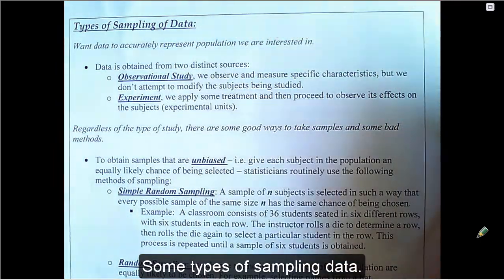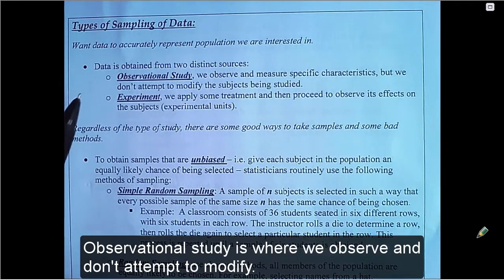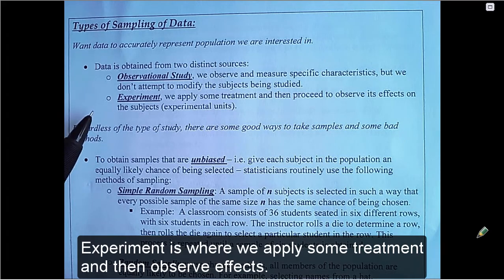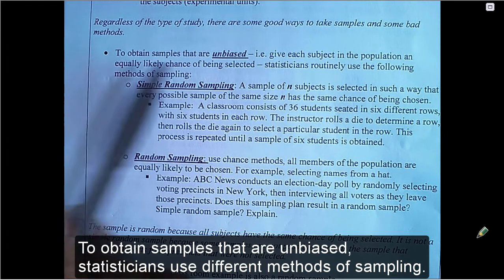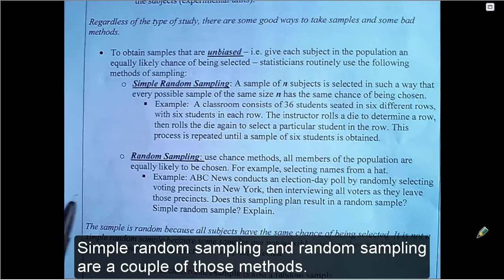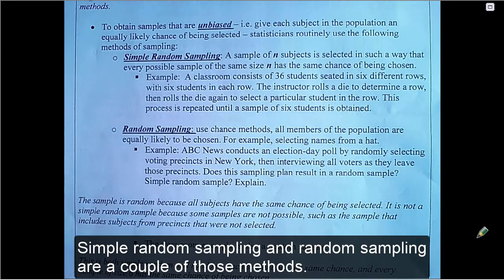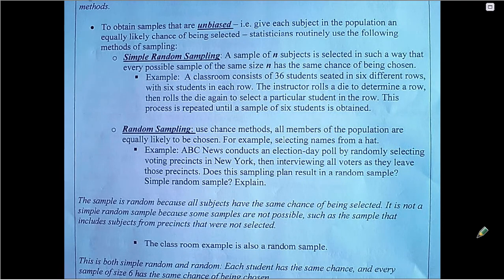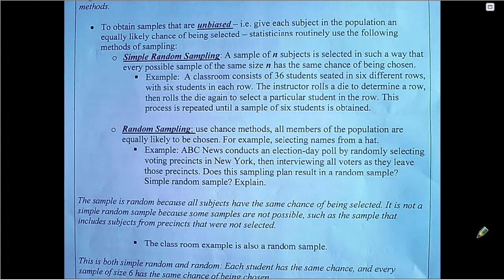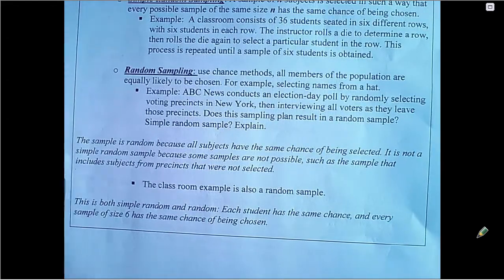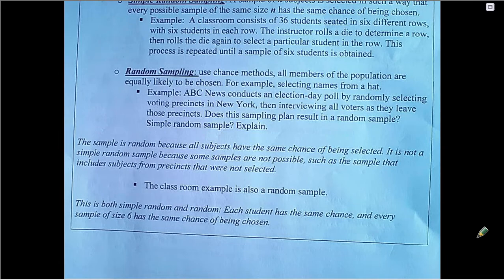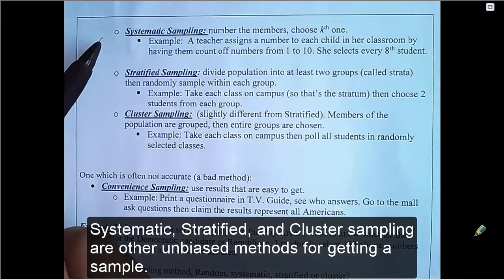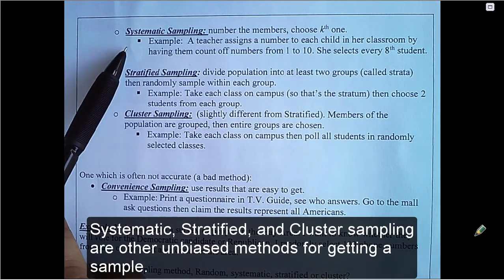Some types of sampling data. Observational study is where we observe and don't attempt to modify. Experiment is where we apply some treatment and then observe effects. To obtain samples that are unbiased, statisticians use different methods of sampling. Simple random sampling and random sampling are a couple of those methods. Systematic, stratified, and cluster sampling are other unbiased methods for getting a sample.